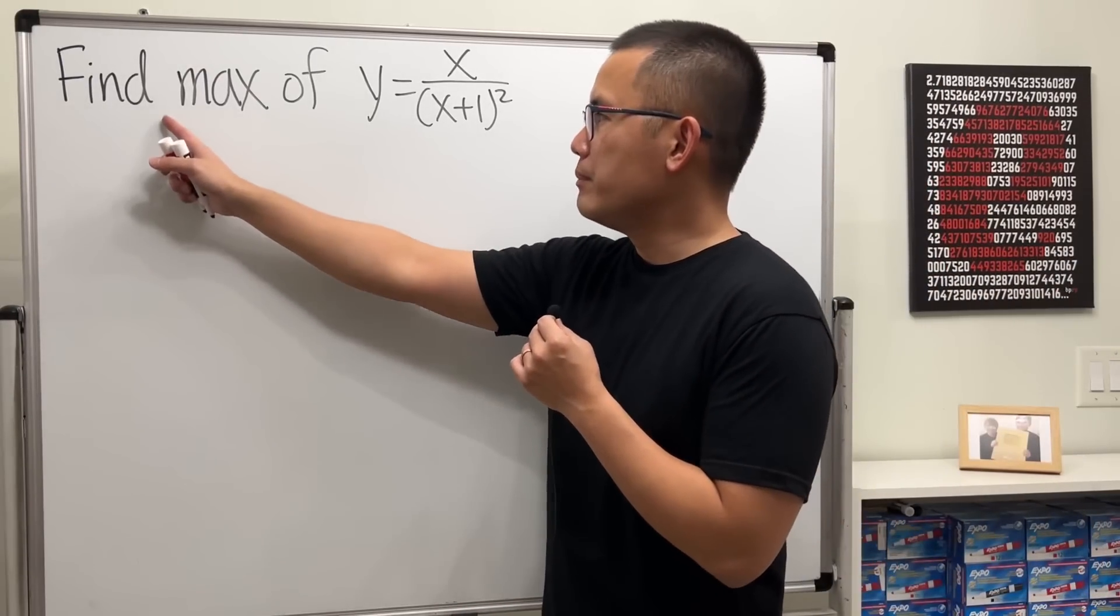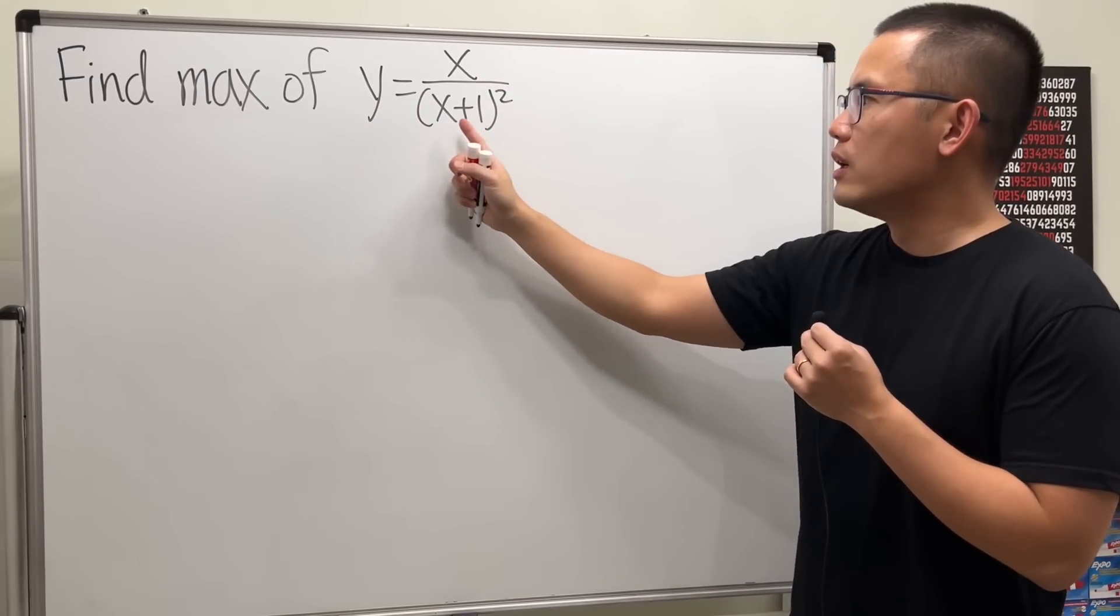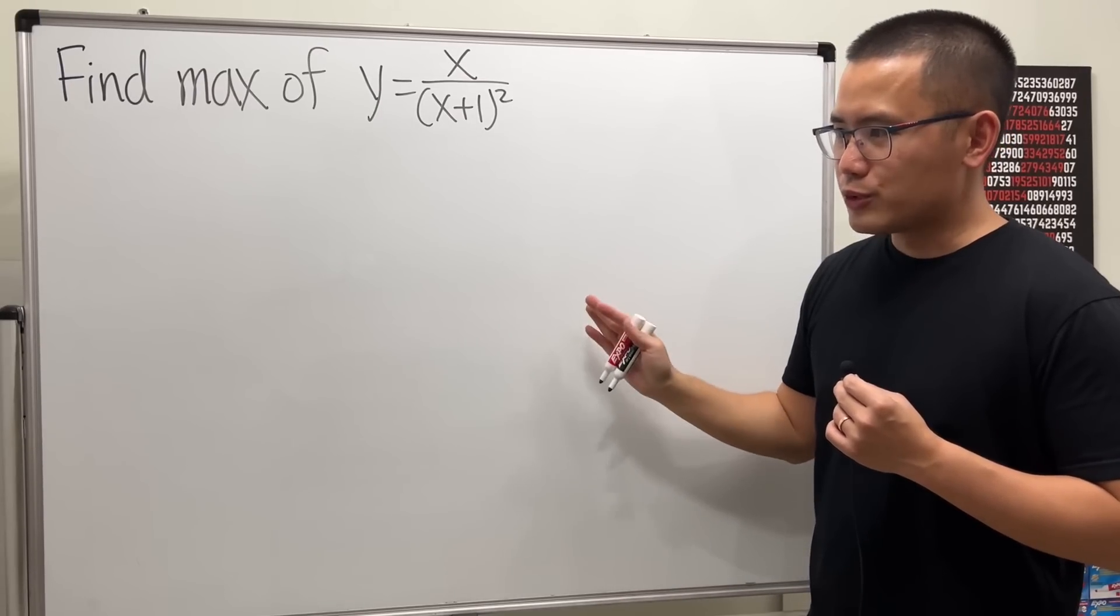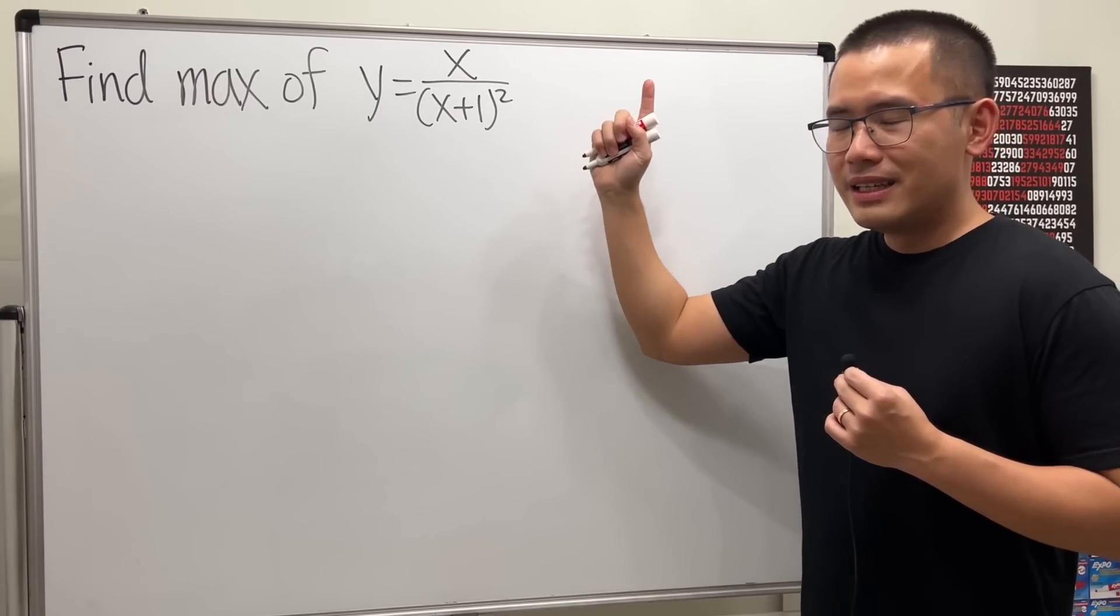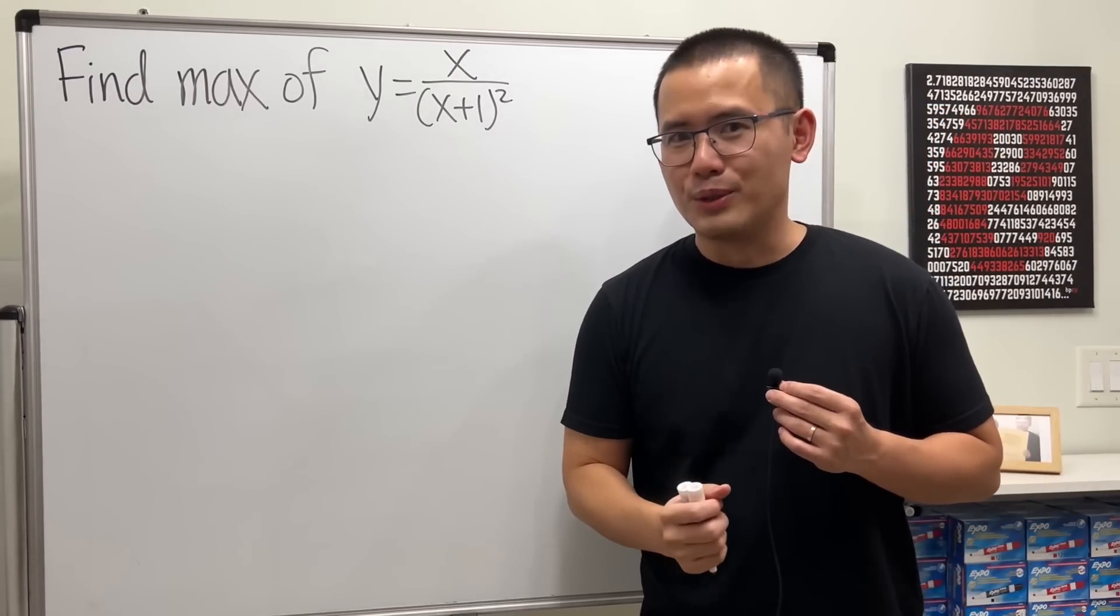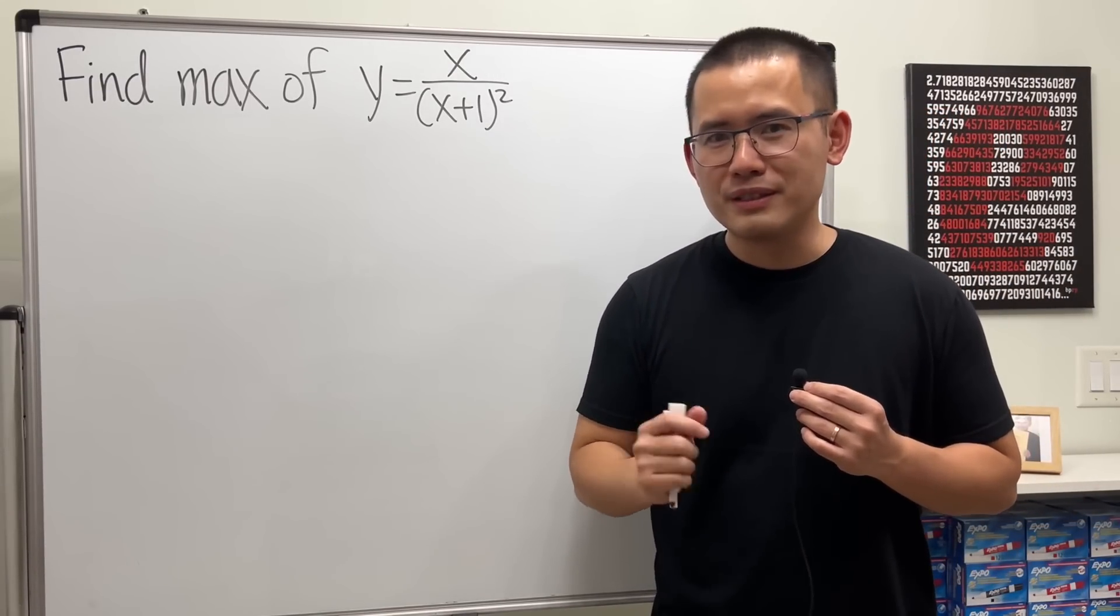We are going to find the maximum value of y equals x over (x+1) squared. But before we do the algebra, I will have to tell you, this function is just about right, so we can still just use the algebra to do it, because otherwise, please still use calculus.